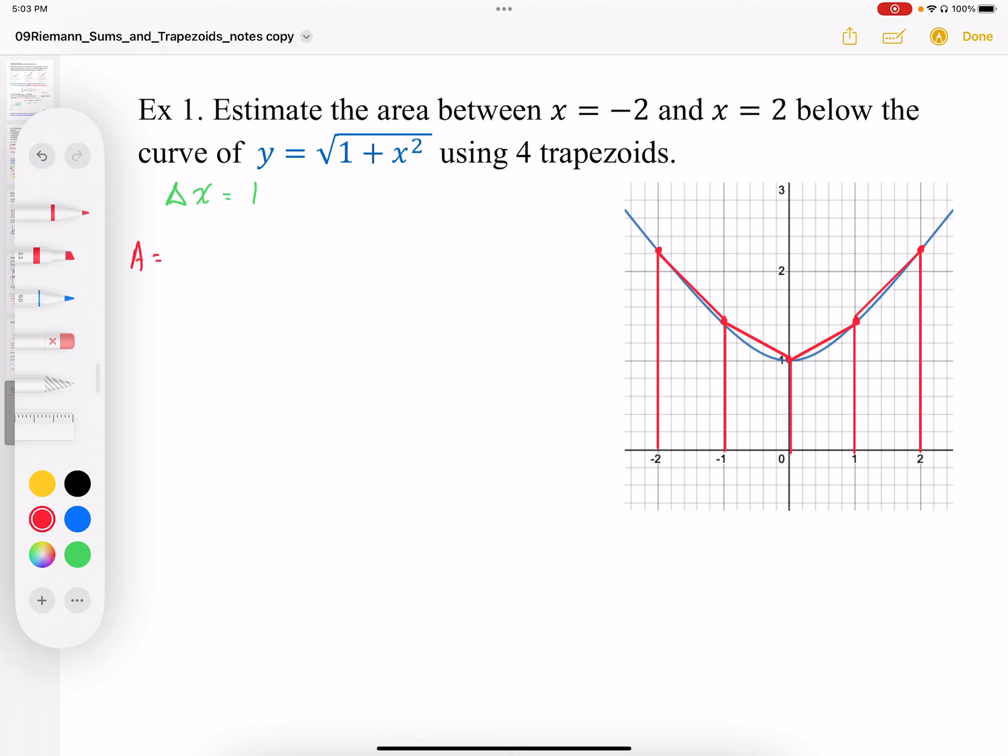So I'm going to calculate the area of each of these trapezoids. I'm going to do the first one. I'm going to plug in x = -2, so I end up with √5 plus, I plug in x = -1, I end up with √2, and that's all over 2. And I got to times that by an interval width of 1.